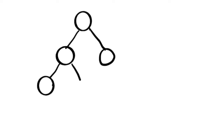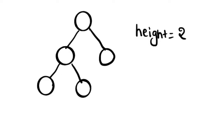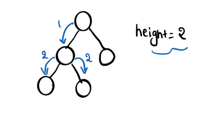Let's take another example. This is a root node and these are its child nodes. Now we extend further one of its child nodes to have more child nodes. The height of the binary tree will be 2, which is this path along with this, or either this, which makes it total 2.